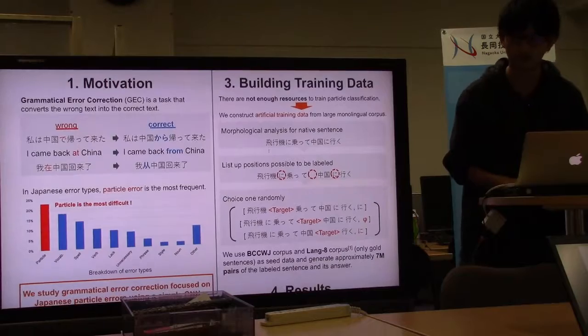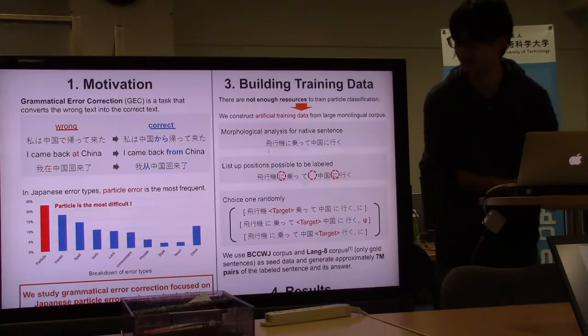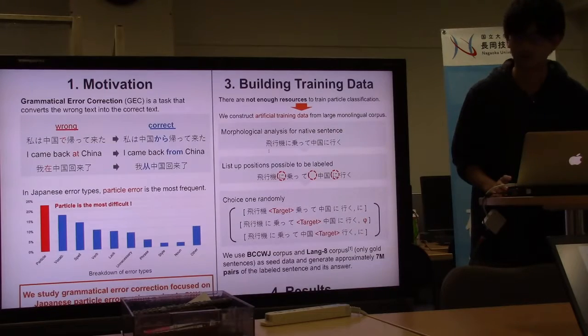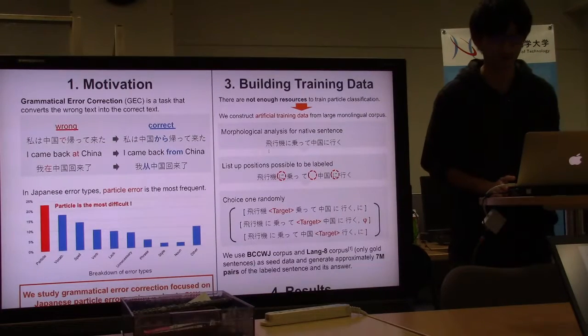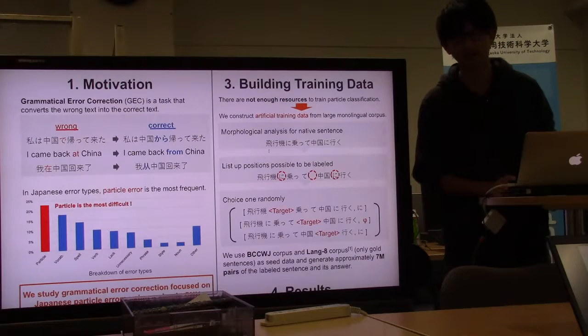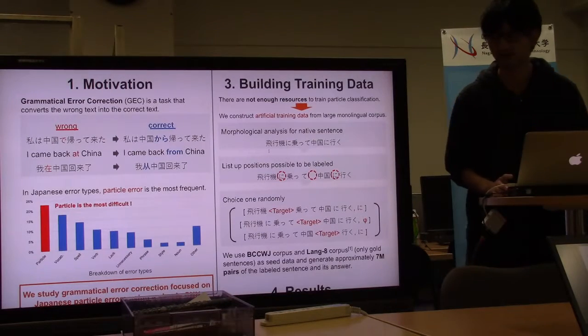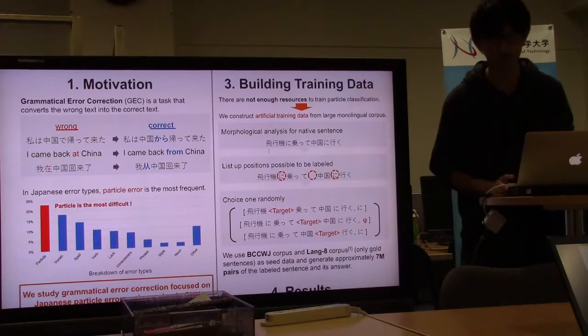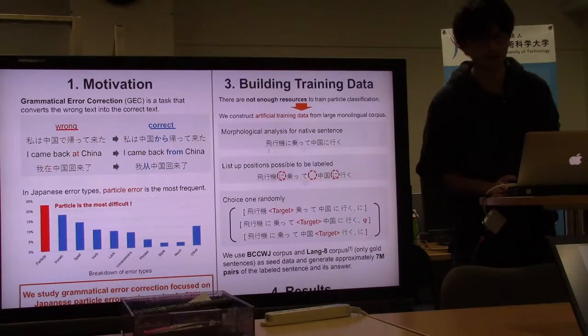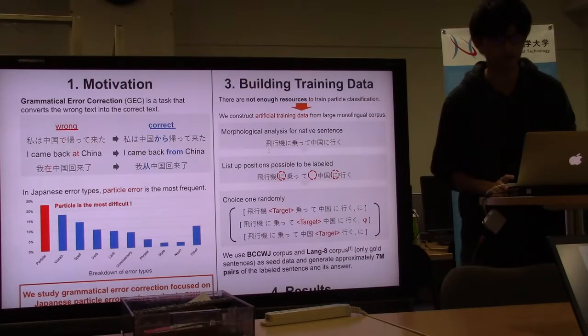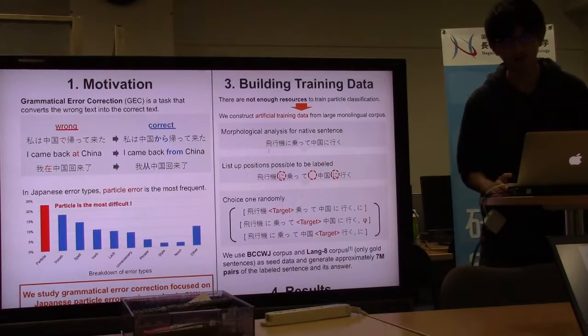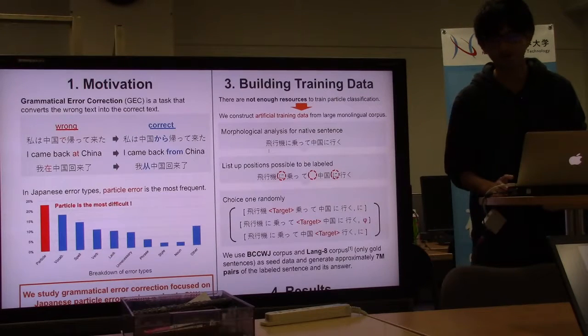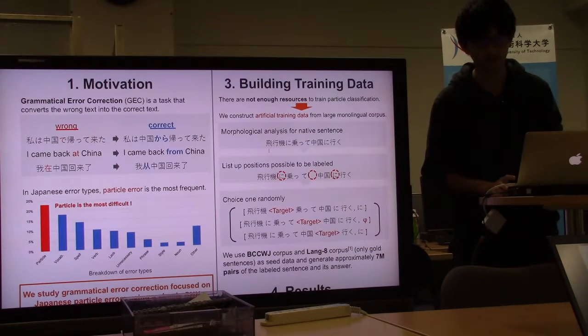Next, I explain about building training data. For training CNN classification model, we require a lot of sentences including particle errors and its annotations. But there are not enough resources in Japanese. So we construct artificial training data from large monolingual corpus.